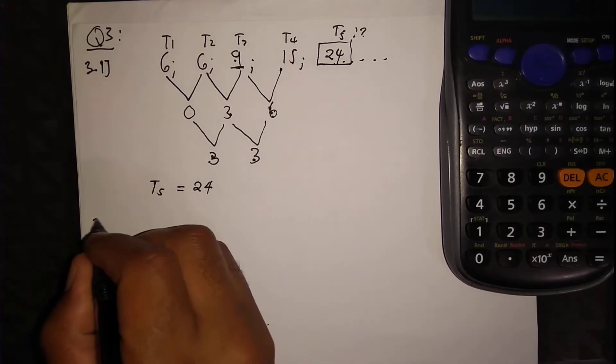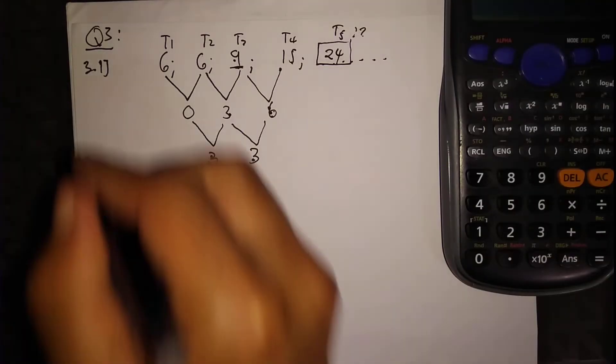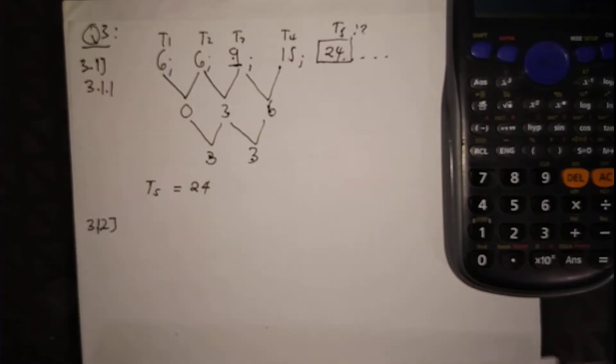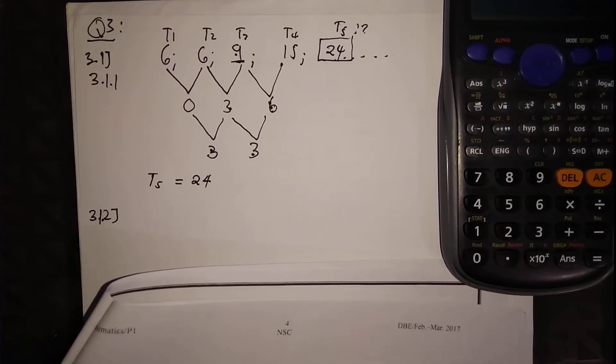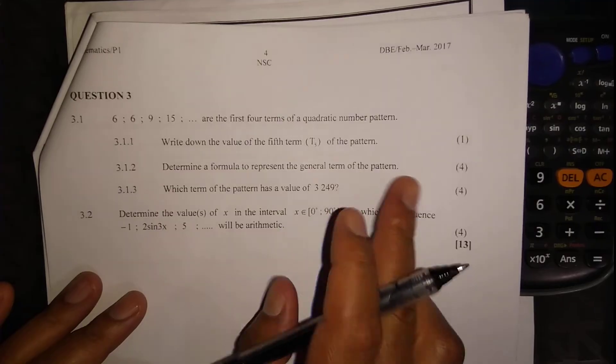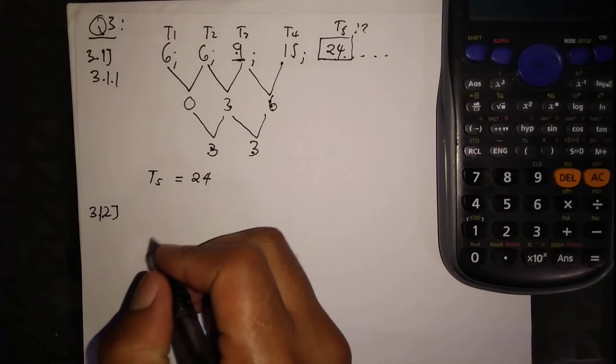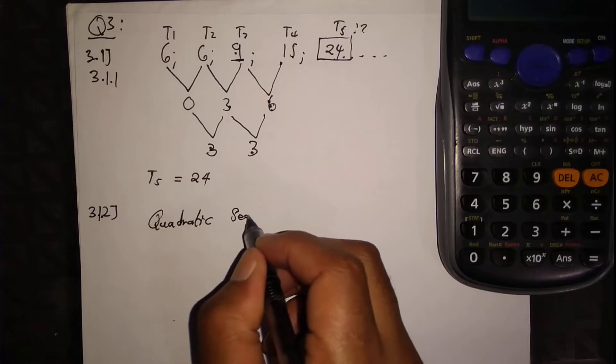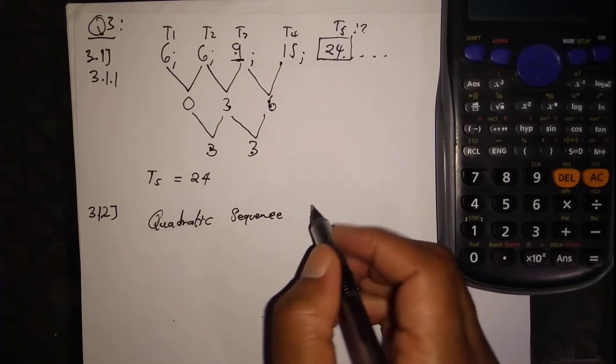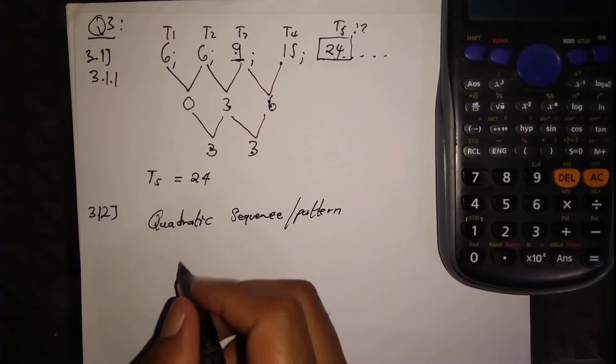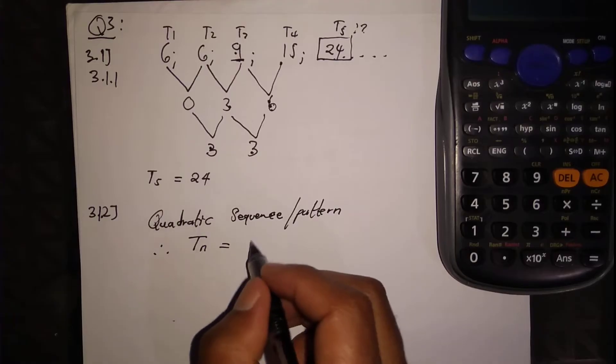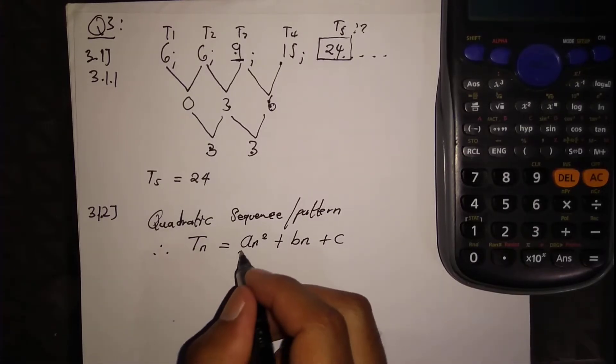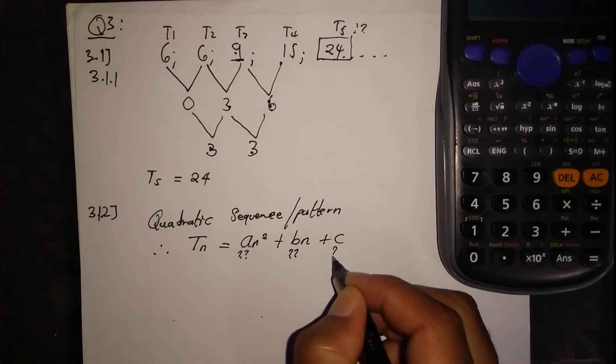Now for Question 3.1.2: Determine a formula to represent the general term of the pattern. For a quadratic sequence or pattern, the general term is Tn equals An squared plus Bn plus C. We need to solve for A, B, and C. We can use the formula 2A equals the second difference.